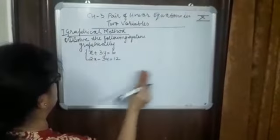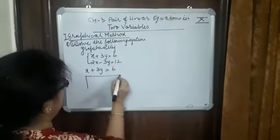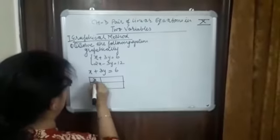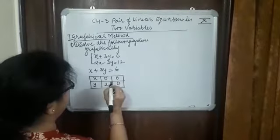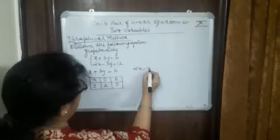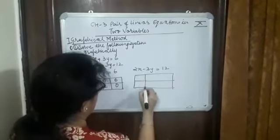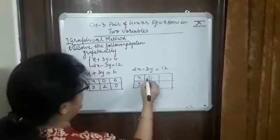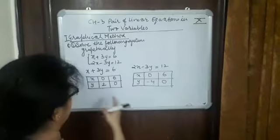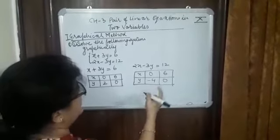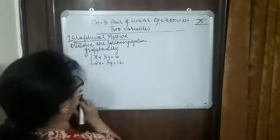Now we are going to tackle it one by one. First, draw the graph. For x plus 3y equal to 6, let's take some points: if x is 0, y is 2; if y is 0, x is 6. For 2x minus 3y equal to 12: if x is 0, y is minus 4; if y is 0, x is 6. So first we will plot (0,2), (6,0), (0,-4), and (6,0).